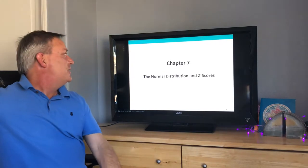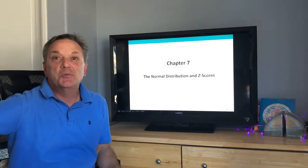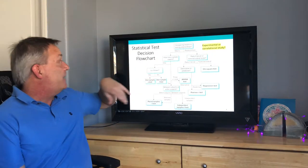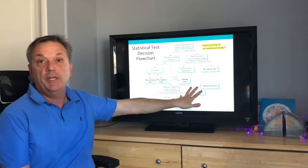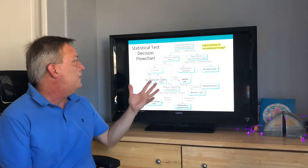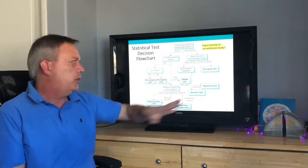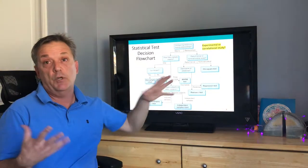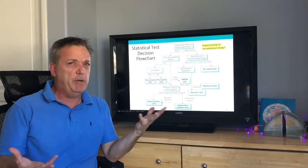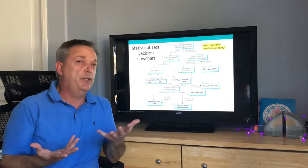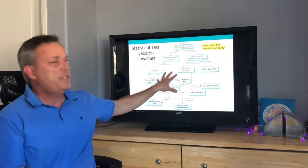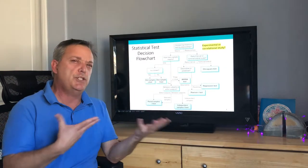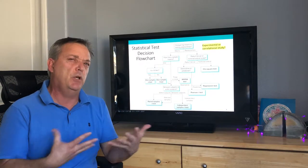Welcome to chapter 7, which covers the normal distribution and z-scores. The first part of the chapter goes over the statistical test decision flowchart. It looks pretty overwhelming, but in the upcoming chapters you're going to learn a lot about this. A lot of success in statistics is learning the logic of statistics and what test to use in what instance.